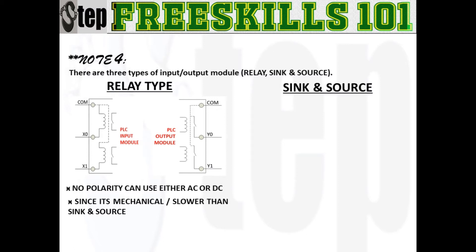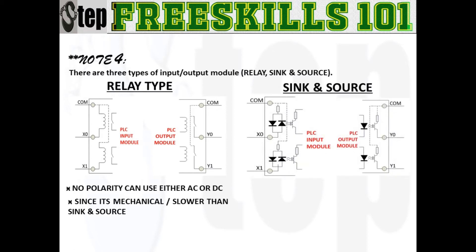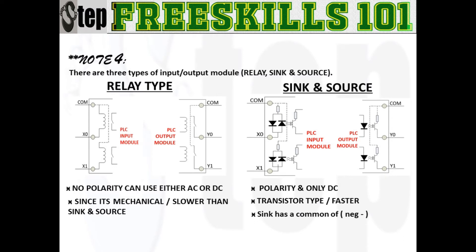Sink and source, or transistor types, are faster but they only cater to DC circuits. Since it's a DC circuit, polarity and wiring is very important and must be given attention. Sink type has a common of negative while the source type has positive. Please take note that 'com' is a short word for common. If your common is positive then your input must be negative, and vice versa. This is considered mostly in DC.